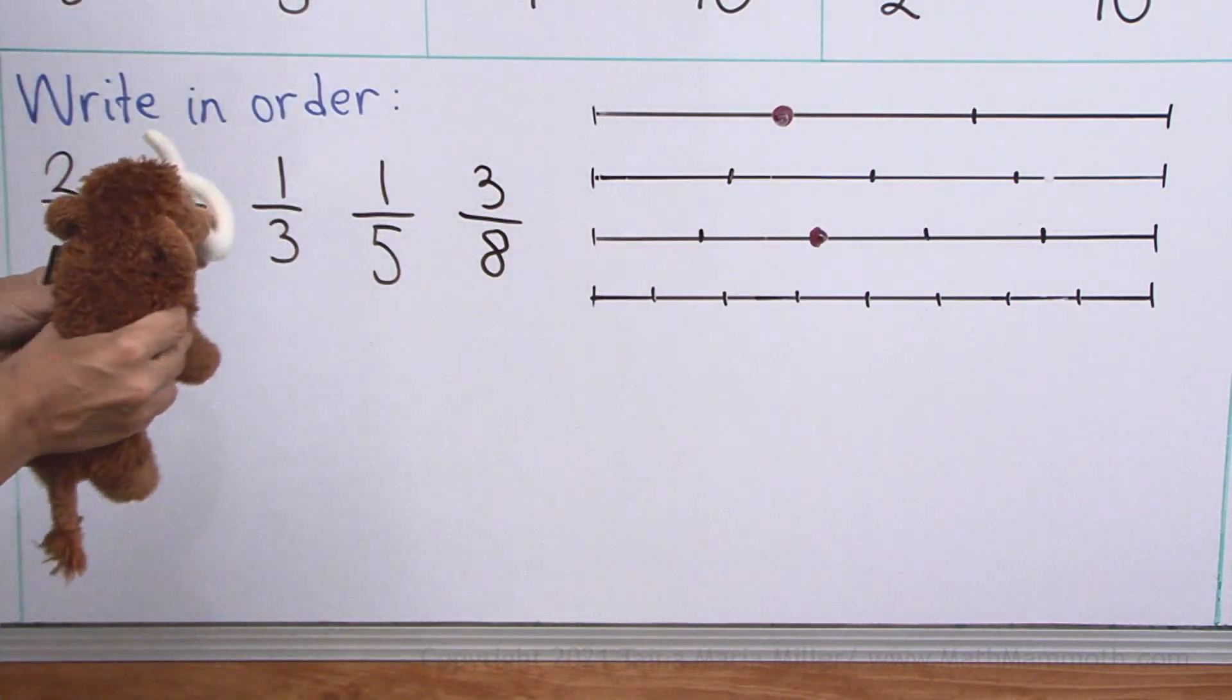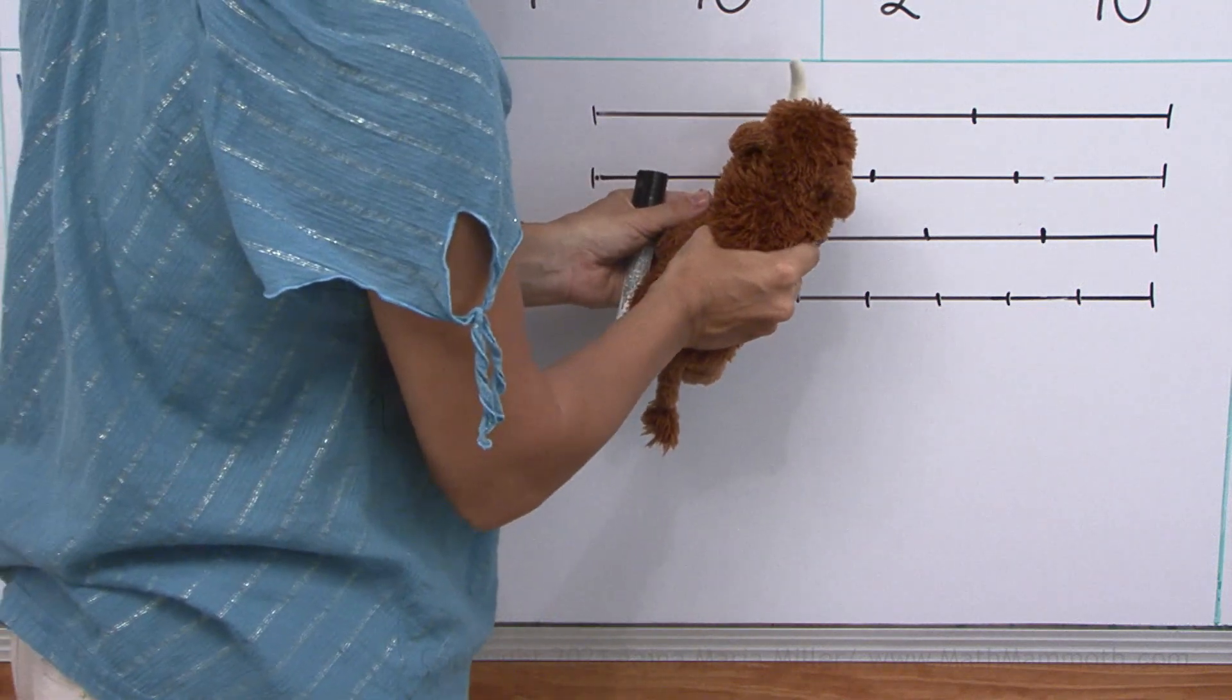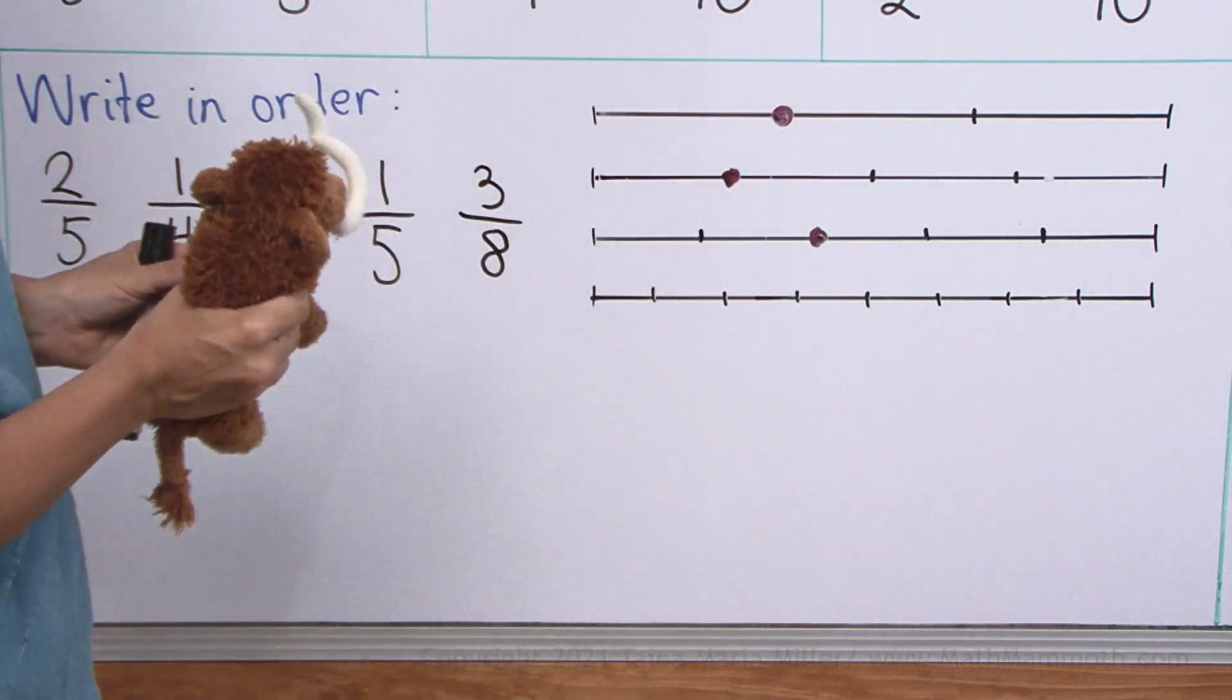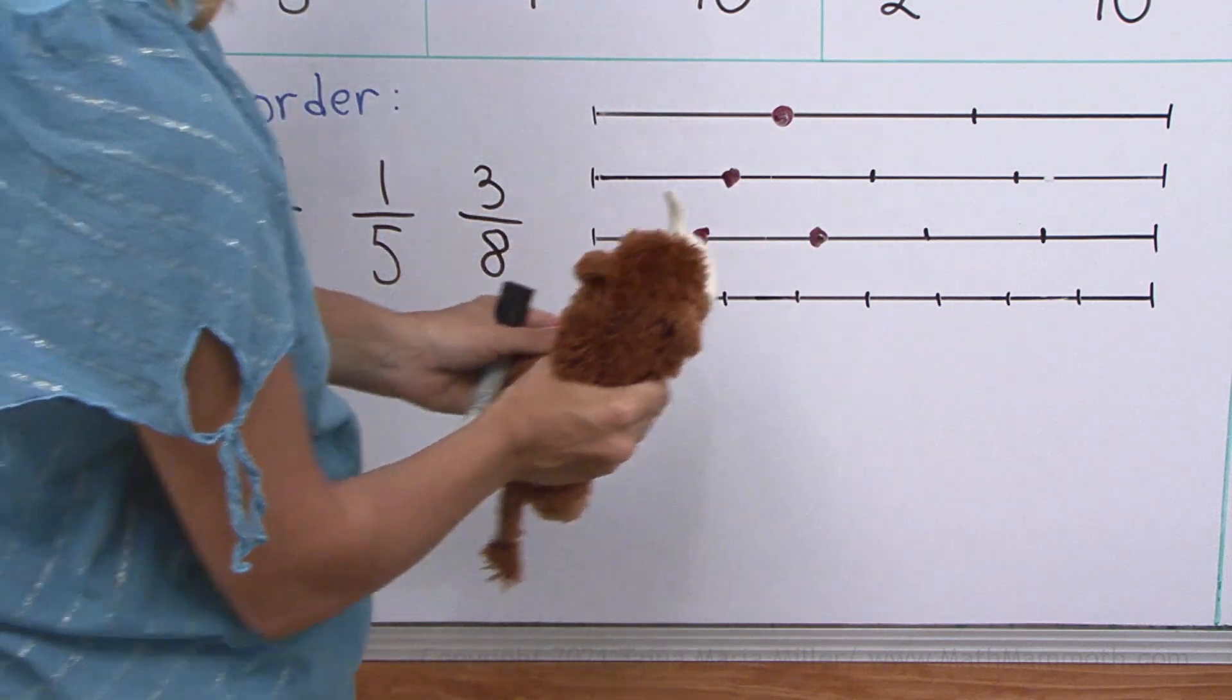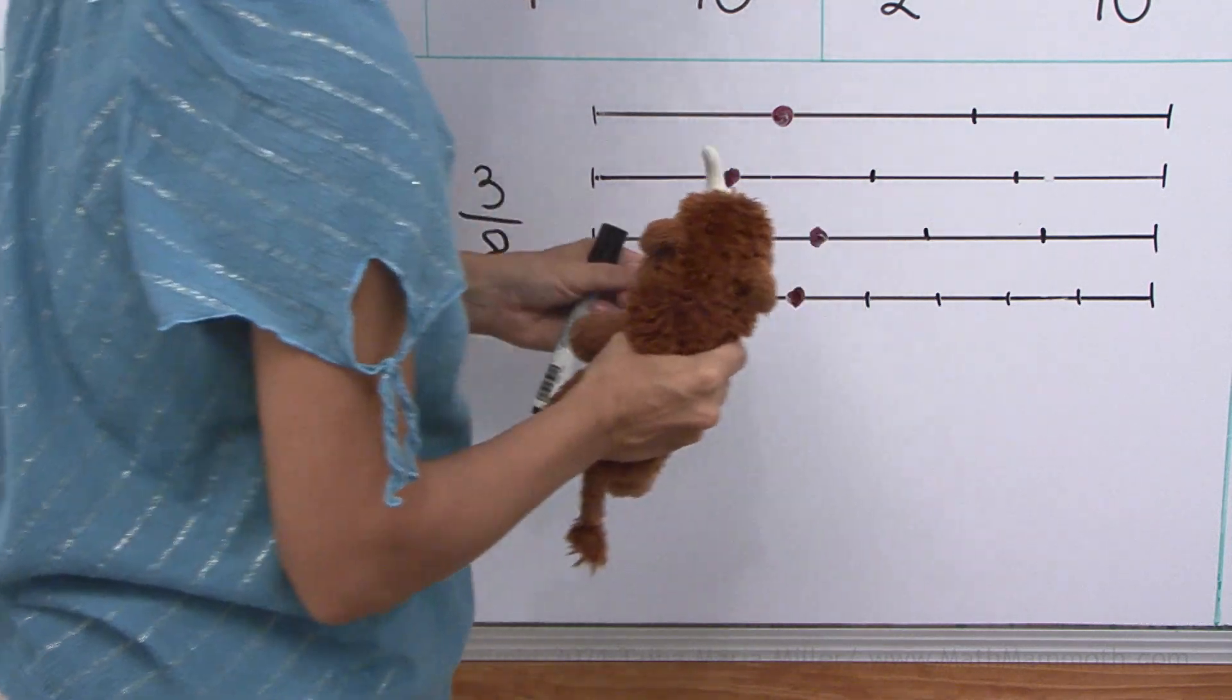One-fourth. And one-third. Oh, we marked that. One-fifth. And three-eighths. There.